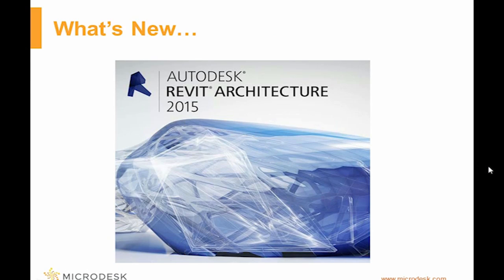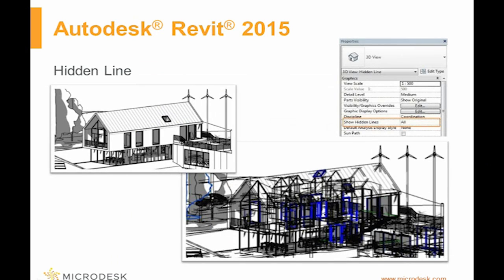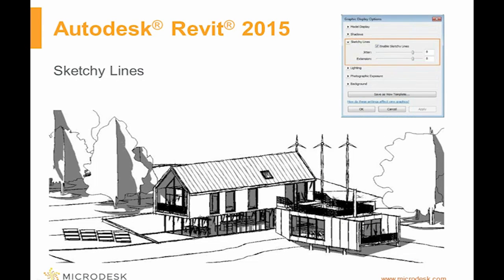So, what's new in Revit 2015? There are quite a few graphic styles that are new, one being the ability to show all hidden lines to better understand the geometry and construction of the building. We also have been given the ability to view our model in a sketchy context. This is something that people wanted to see — it was much easier for the client to view a design as free-flowing and conceptual with sketchy lines, rather than set in stone with hard lines.